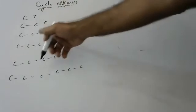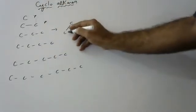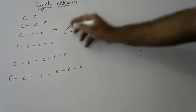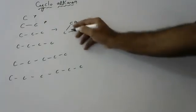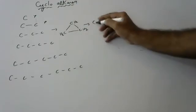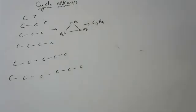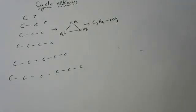We can't close a single carbon, we can't close two carbons, but we can close three carbons. If you want to close three carbons, it looks like this. Each carbon has two bonds over two hydrogens, and the formula turns out accordingly. This structure — that is not propane — this is called cyclopropane.